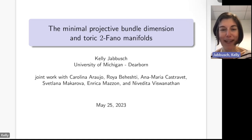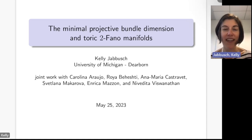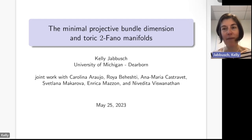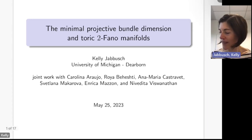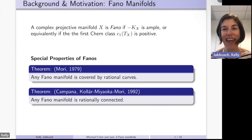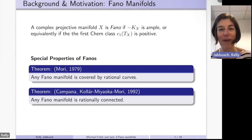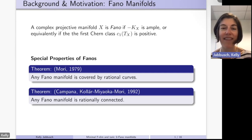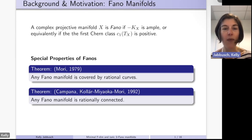I want to explain the words in this title, starting with the second part: 2-Fano. Let me give a little motivation for higher Fano manifolds. A complex projective manifold is Fano if the anti-canonical line bundle is ample, or equivalently if the first Chern class is positive.